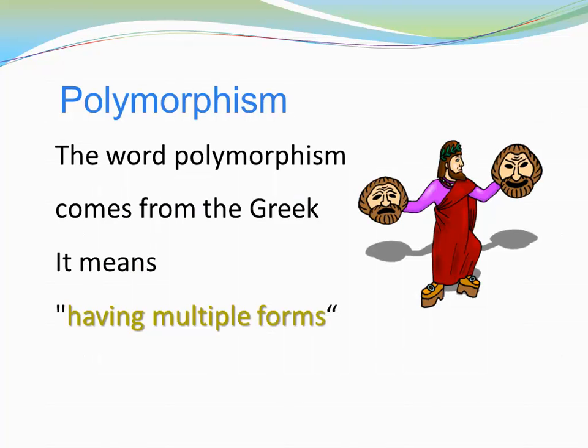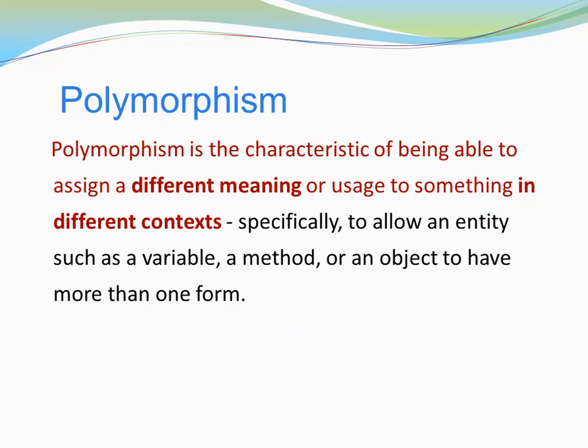The word polymorphism comes from the Greek. It means having multiple forms. Polymorphism is the characteristic of being able to assign a different meaning or usage to something in different contexts — specifically, to allow an entity such as a variable, a method, or an object to have more than one form.